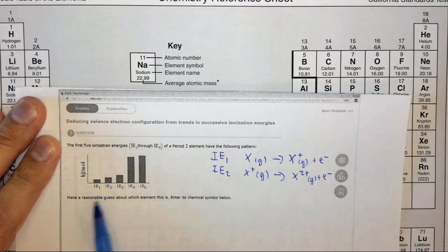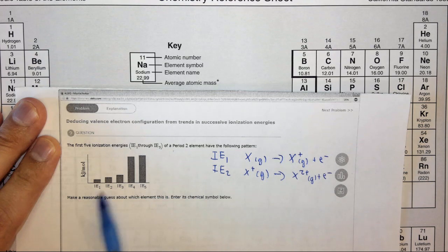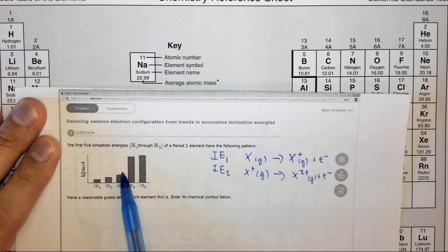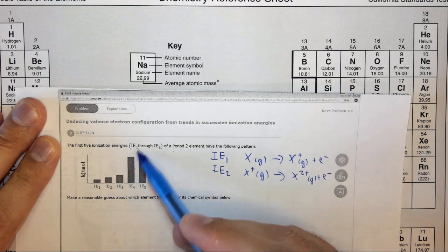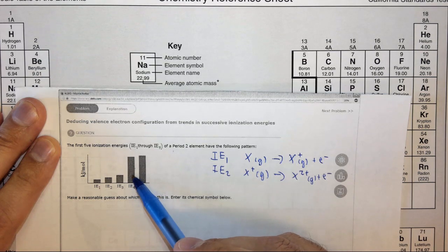So essentially what this question is saying is, what period two element has three valence electrons? Because again the fourth one takes a lot of energy, so it's a core electron.